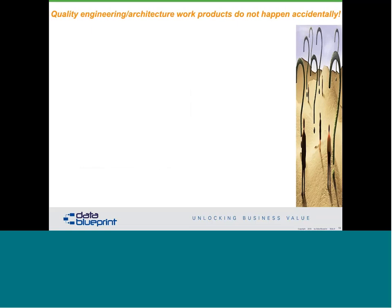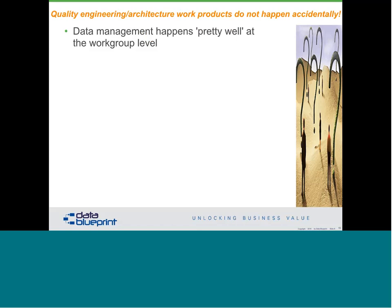I was fortunate to go to India last year, and over the cash register at a tea farm I saw this phrase: 'Quality engineering architecture work products do not happen accidentally.' You can't do the kind of work that you need to on an engineering scale by accident — it does not happen. Data management works pretty well at the work group level. In fact, it is a defining characteristic of a work group: a group of people who exchange information.